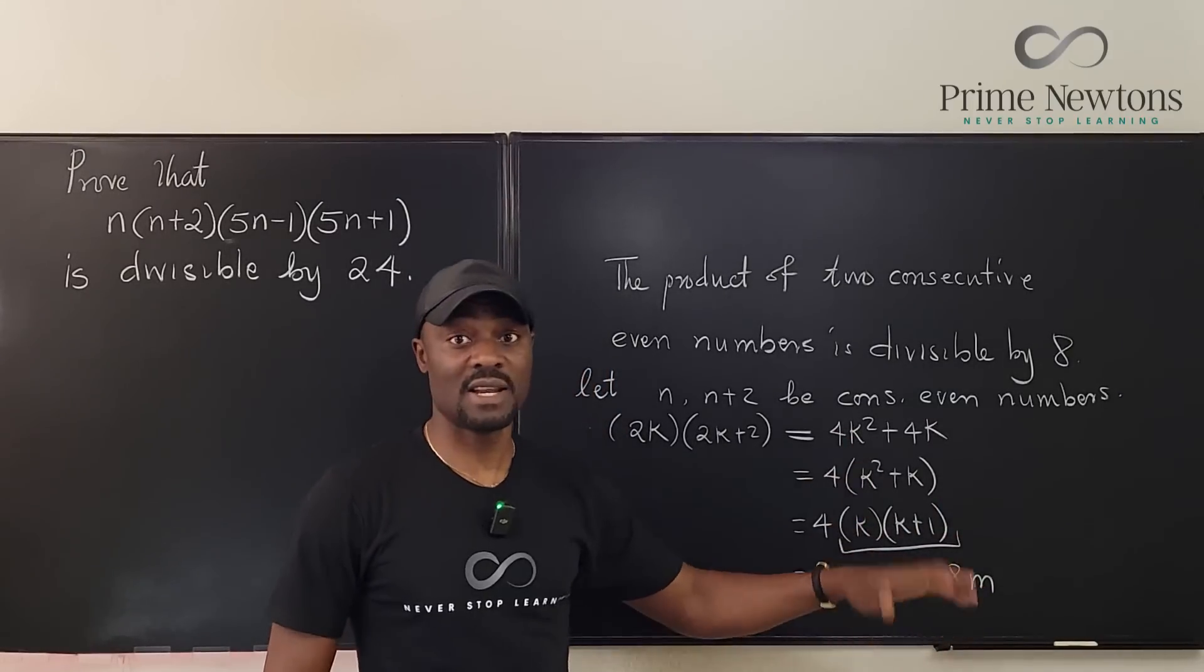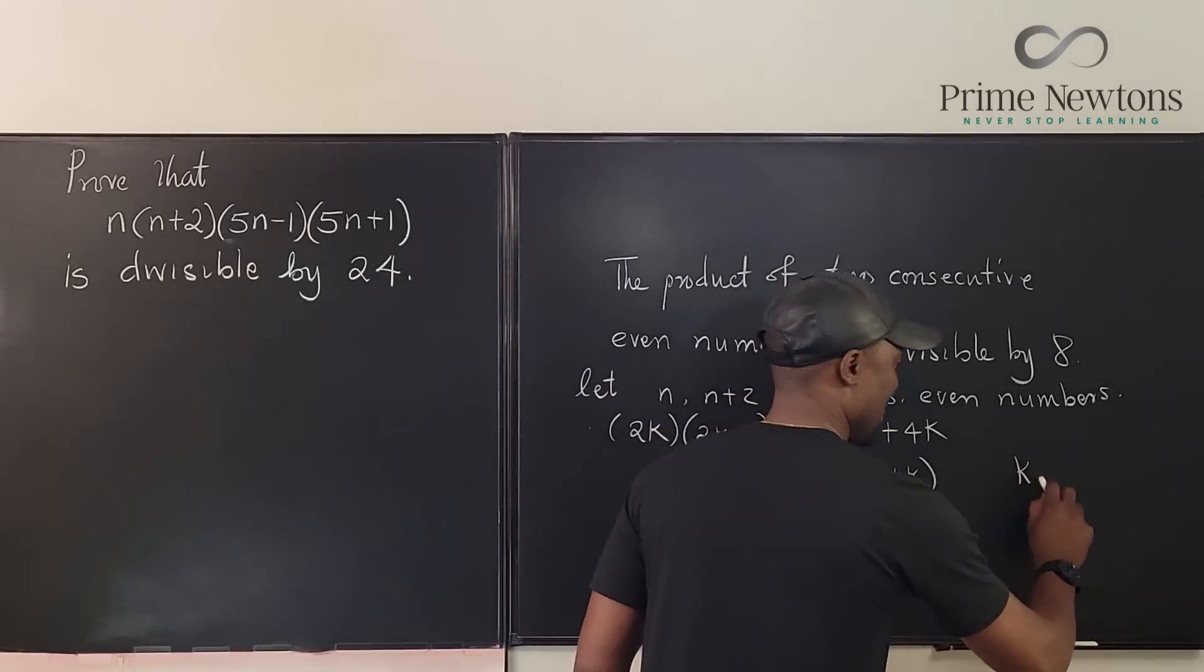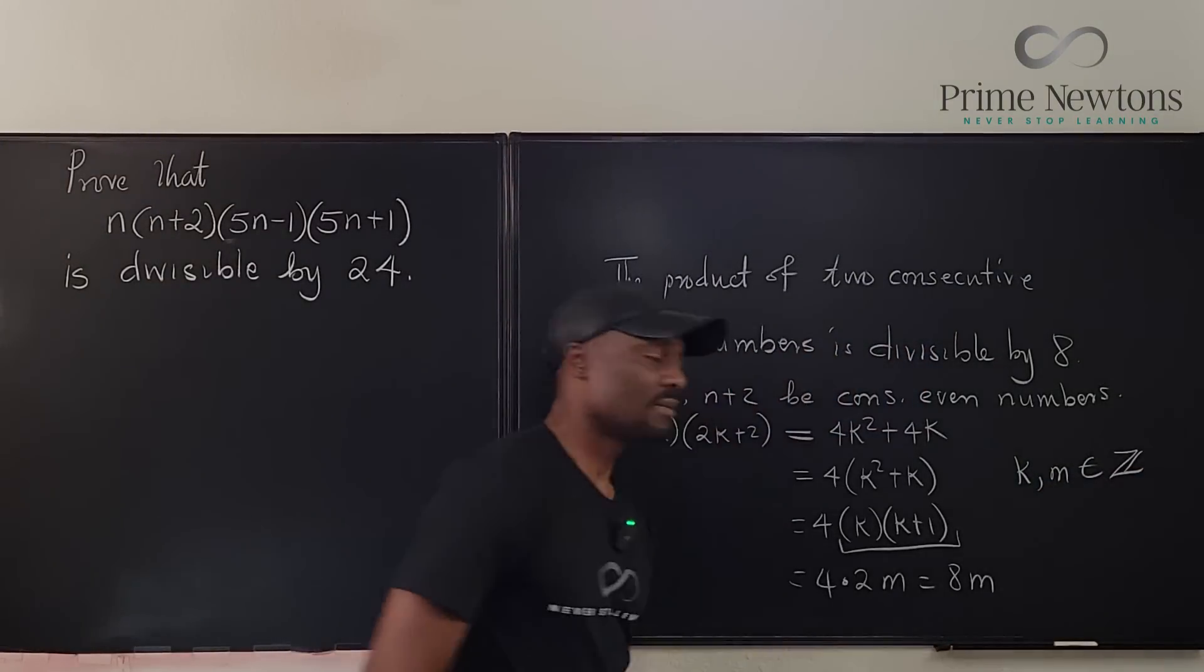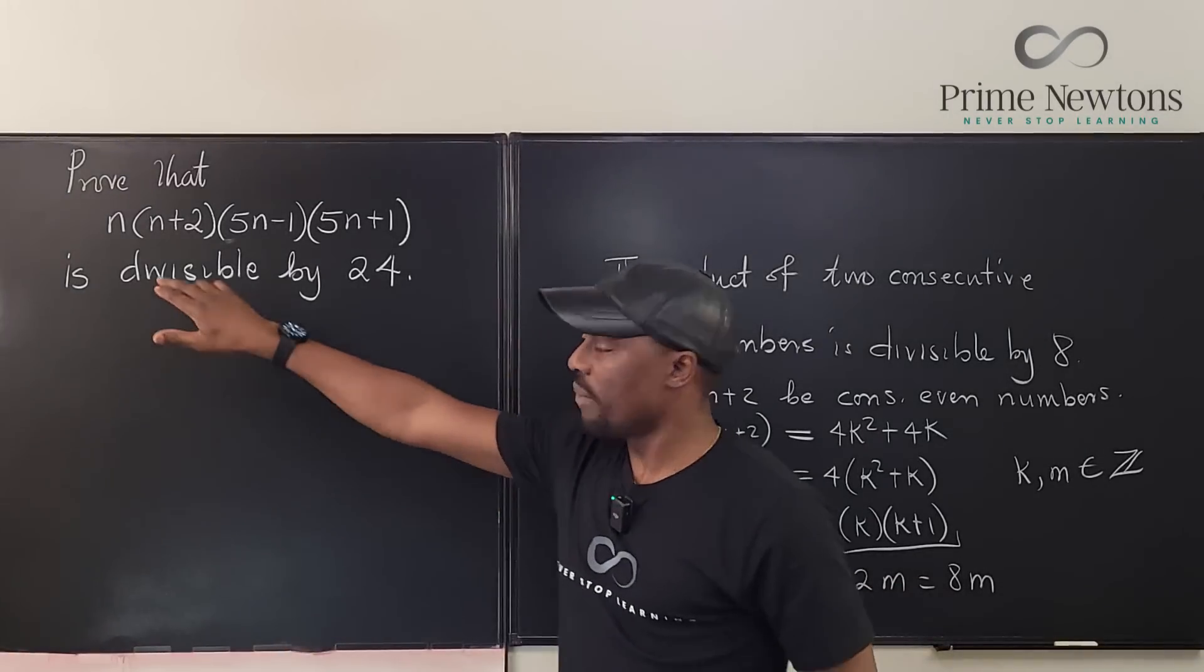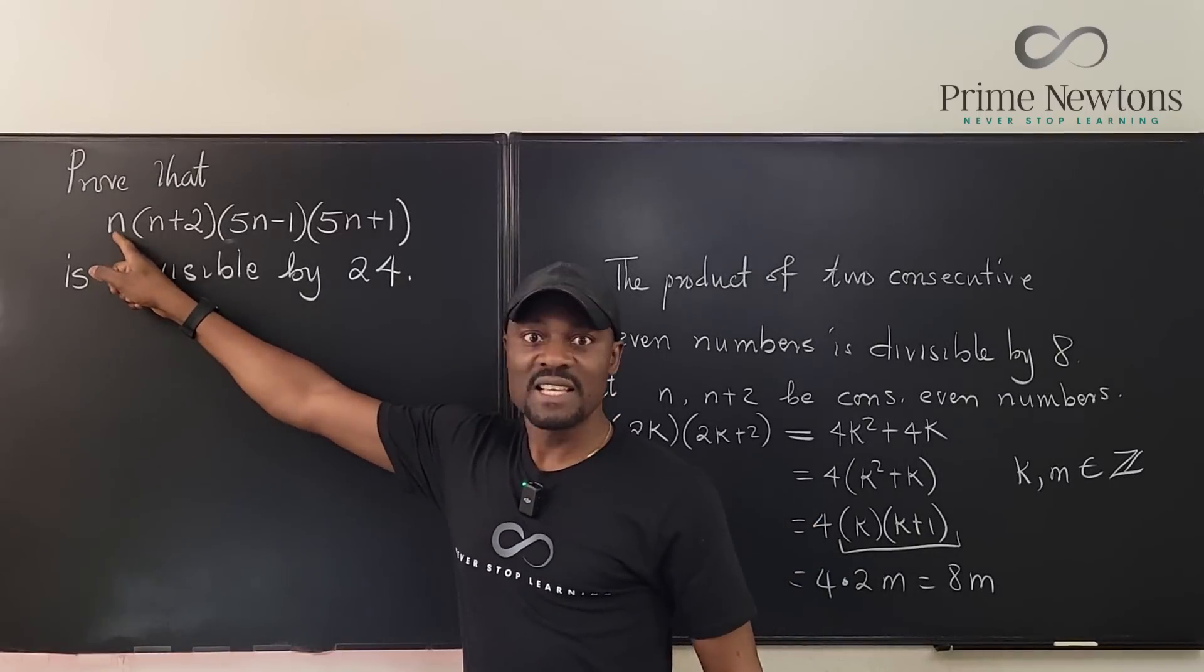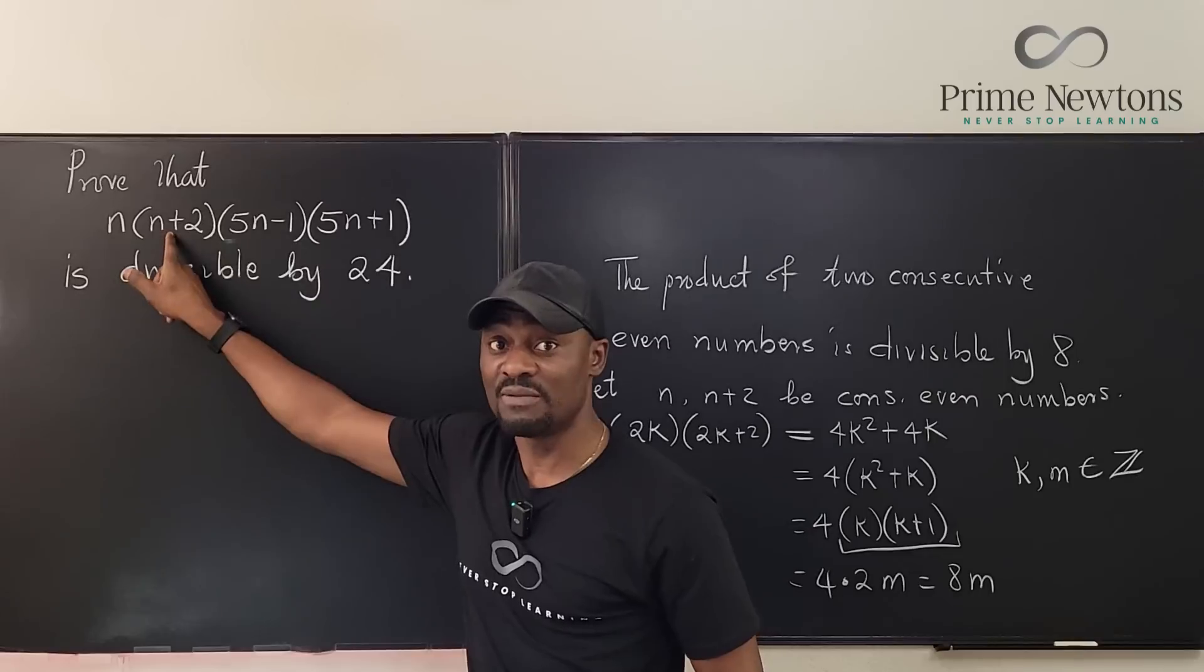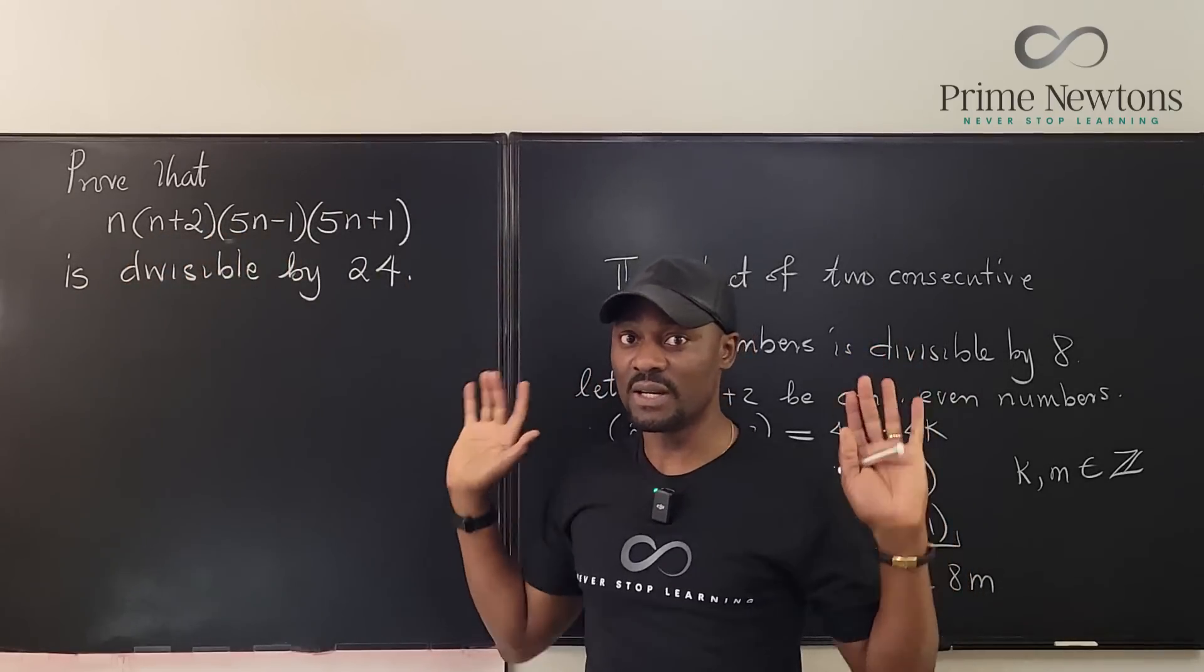I forgot to tell you that k is an integer. Well it's always assumed that k is an integer. K, m are integers. And that's it. So obviously, from what I just did, if n is an even number then n times n plus 2 is a product of two consecutive even numbers, so this is a multiple of 8 and we're good.